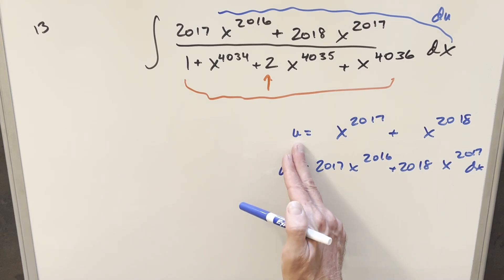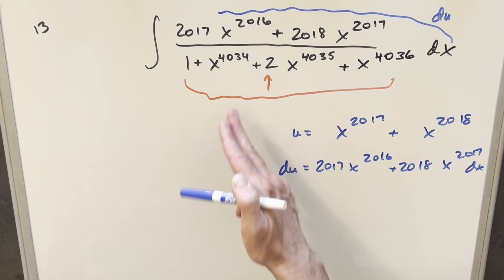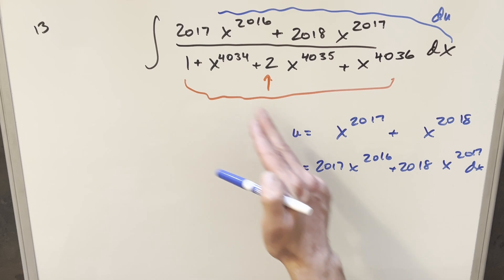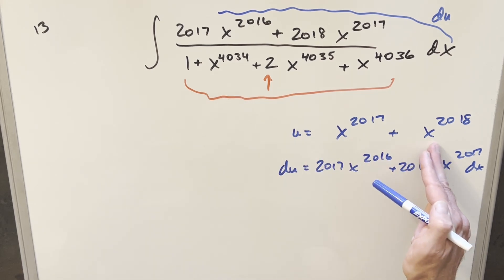The thing we notice here is if we just square our u value, I'm not sure how it's going to work out. But when you square this, you're going to get x to the 4034. If you square this, you're going to get x to the 4036.